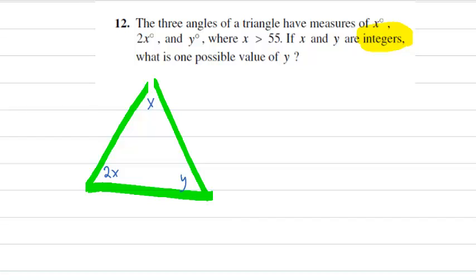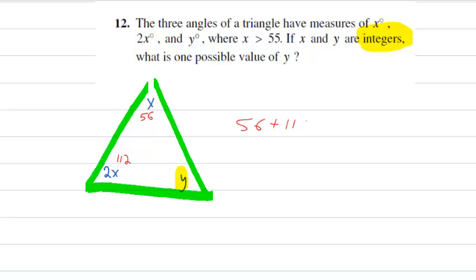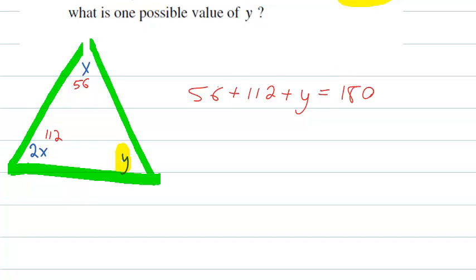Well, X is an integer and it's greater than 55. So, to keep things simple, we'll make it 56. If we do that, that means that 2X is 112. So, what's a possible value of Y? We just need to add the three of these together. 56 plus 112 plus Y equals 180. And go ahead and solve that. 168 plus Y equals 180 after we combine our like terms. Take away 168 from both sides. And Y equals 12. So, one possible value for Y is 12. It's not the only one, but it's a possibility. And these questions tend to be challenging because they're so open-ended.